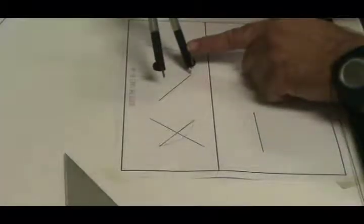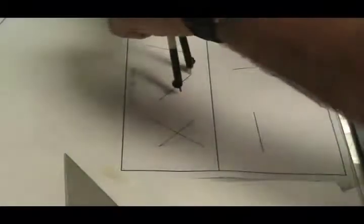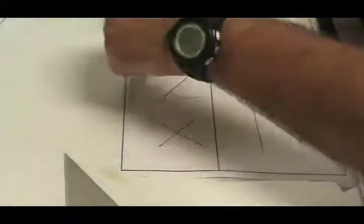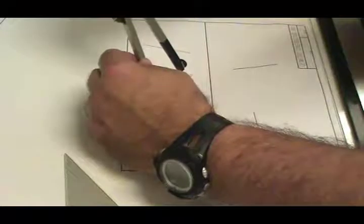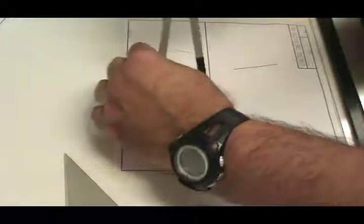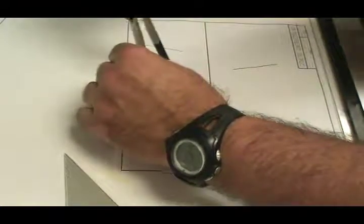So I'm setting up on one end of the line I want to bisect, opening the compass more than halfway, drawing an arc, setting up on the other end of the line, drawing another arc, making sure those two arcs intersect